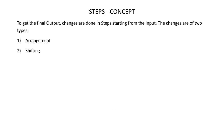Let's now understand the concept of steps. To get the final output, changes are done in steps starting from the input. The changes are of two types: arrangement and shifting. Let's now understand what is arrangement method and what is shifting method.